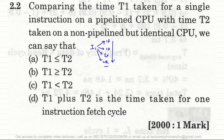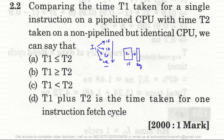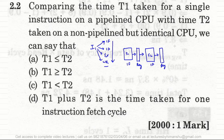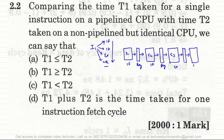In a pipelined CPU, stage S1 represents instruction fetch, followed by a register. Stage S2 represents instruction decode with a register after it. Stage S3 is the execute phase with a register, and stage S4 is the write back phase, also followed by a register. These registers act as buffers or storage media between stages.